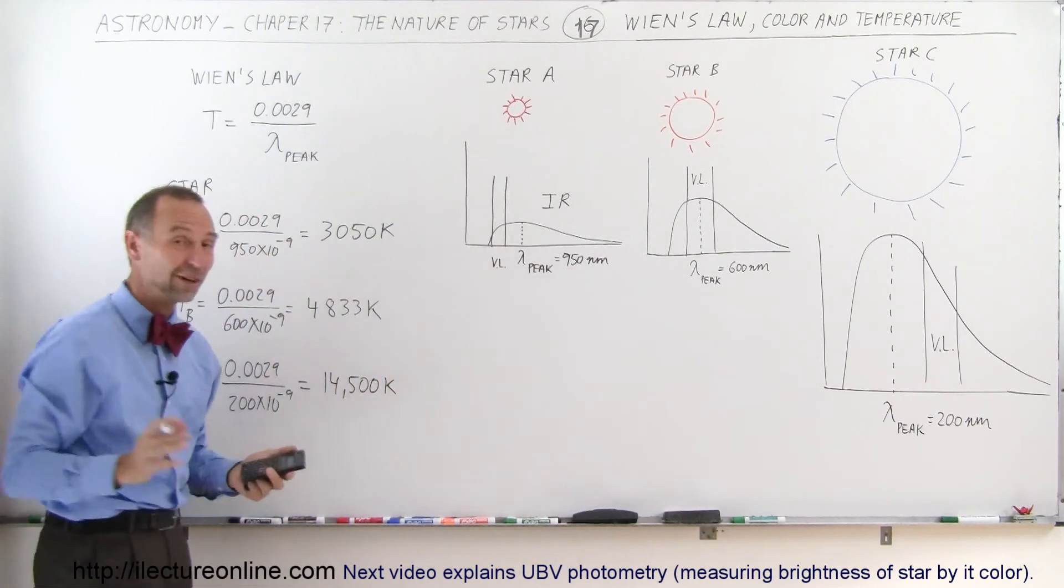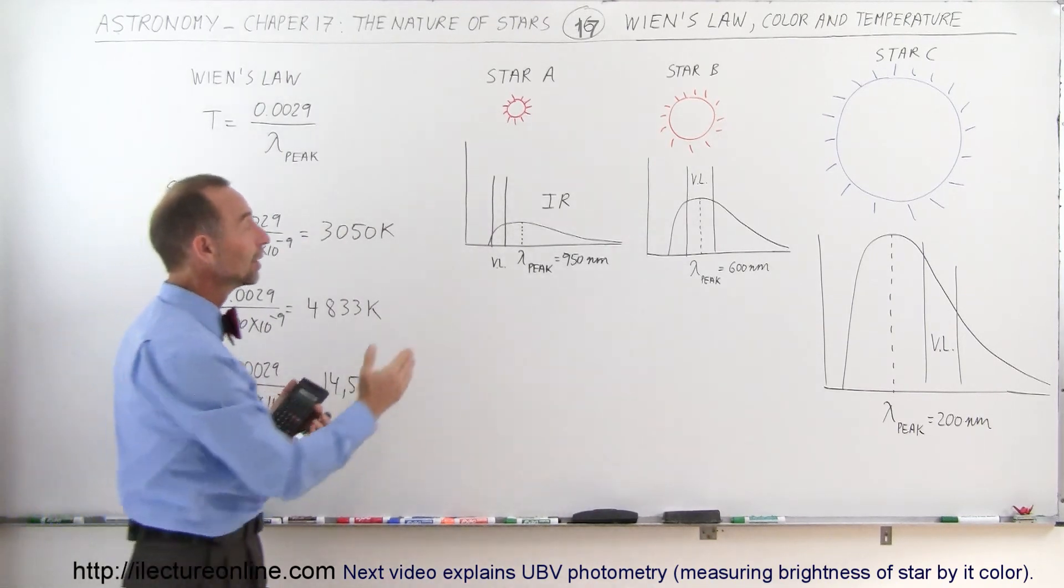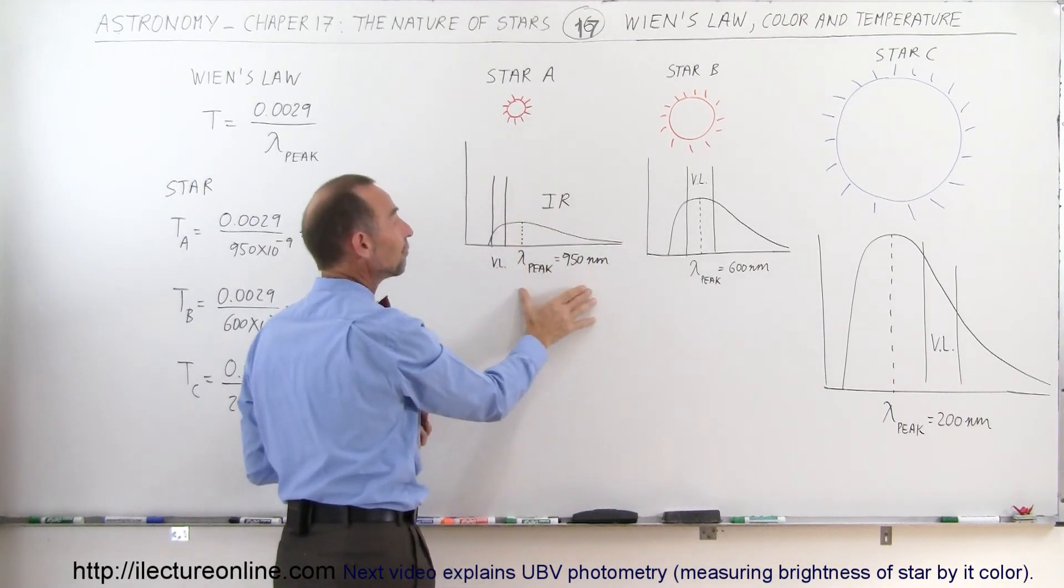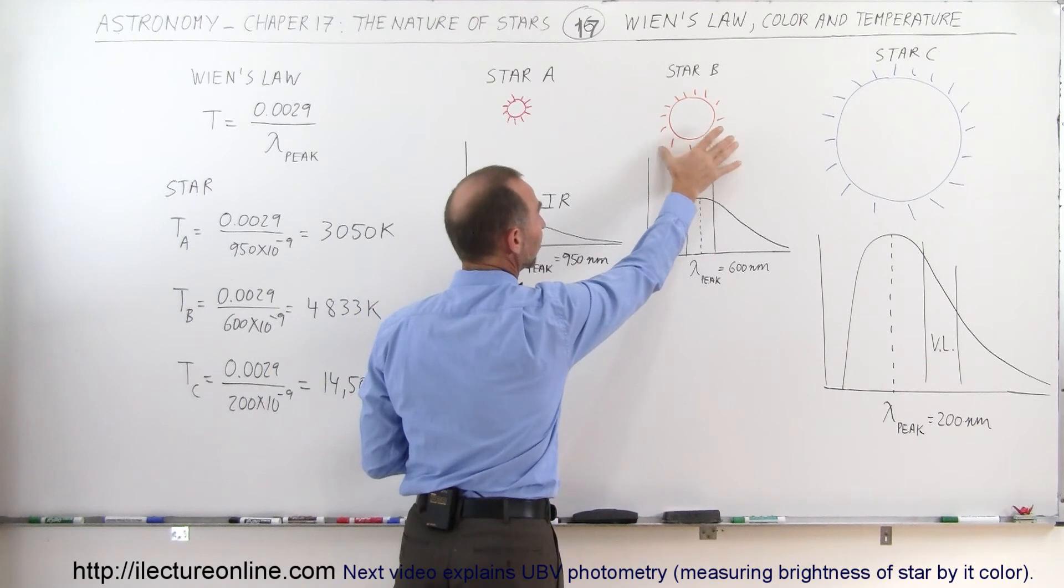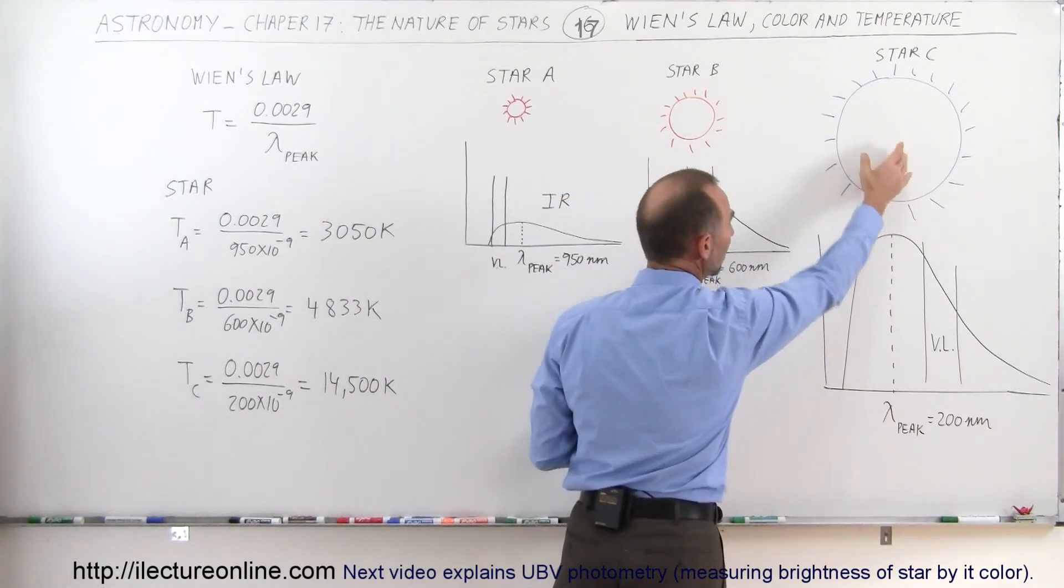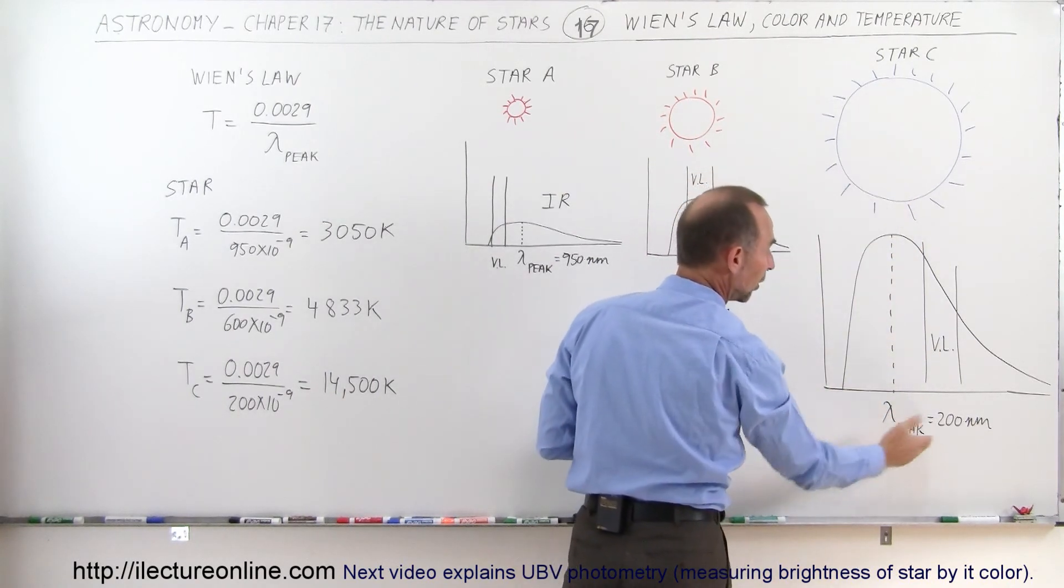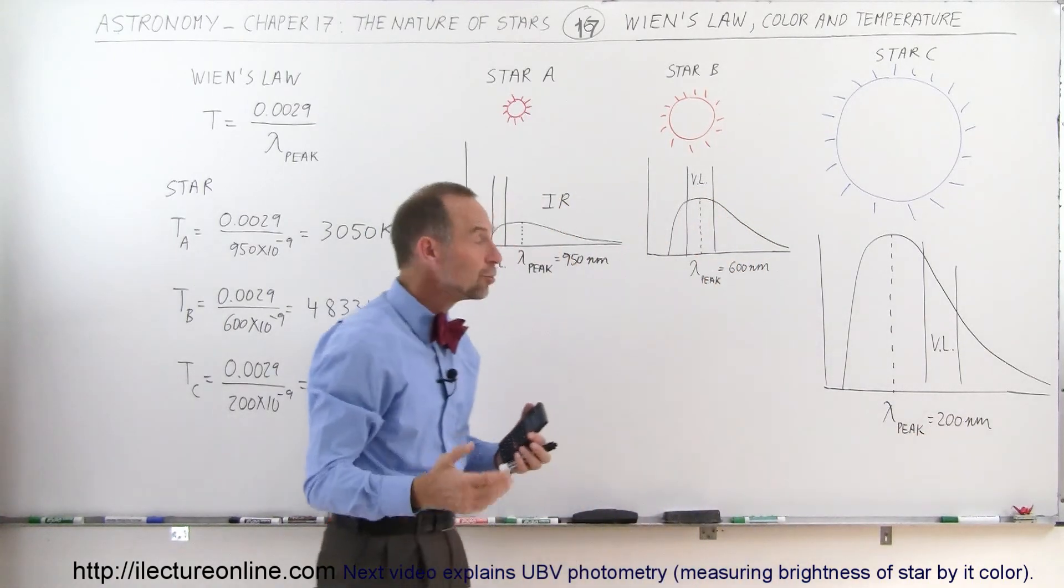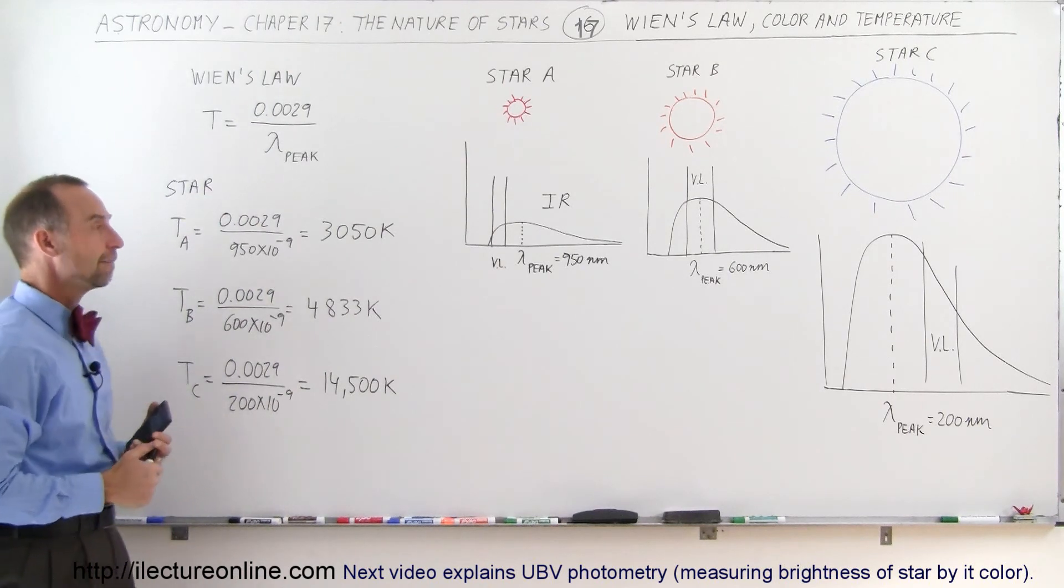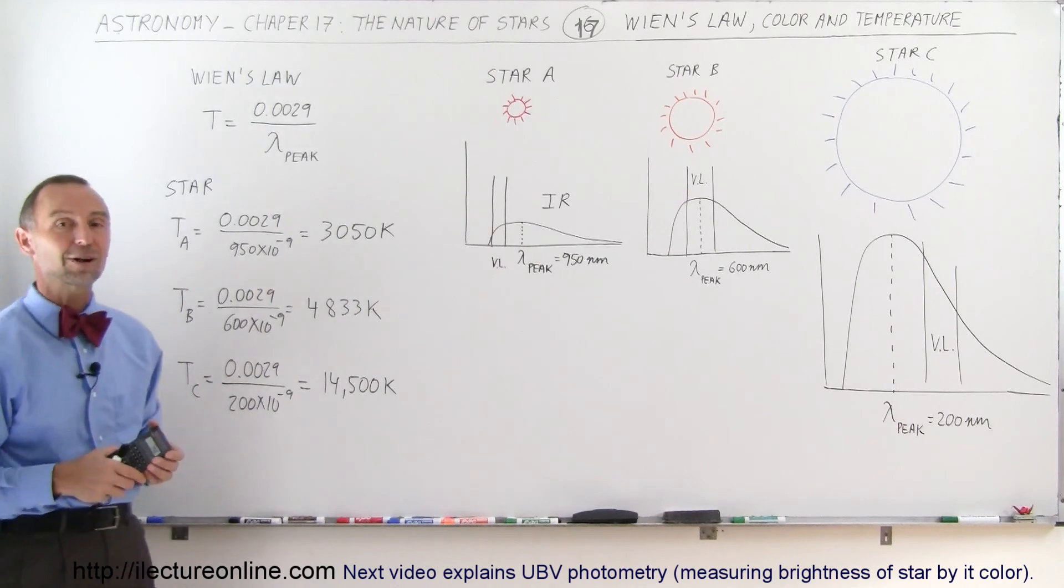Notice with Wien's Law, it's very straightforward to tell the surface temperature of stars simply by measuring where the peak radiation lies. Small red stars peak in the infrared; medium-sized stars like the Sun or smaller peak in the visible light range; and very big, bright blue stars peak in the UV radiation band to the left of visible light—those are very hot stars. Wien's Law is a very handy way of determining how hot the surface temperature of a star is.